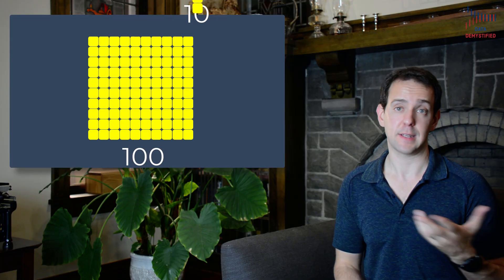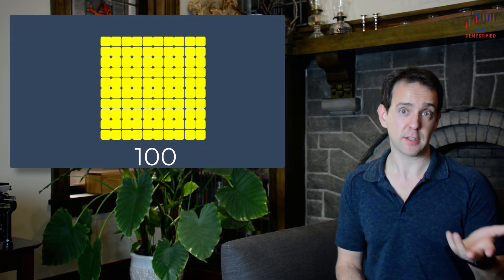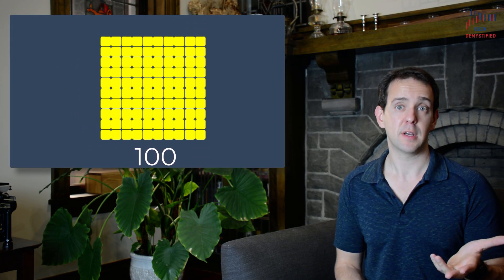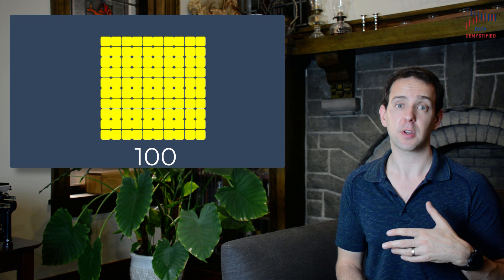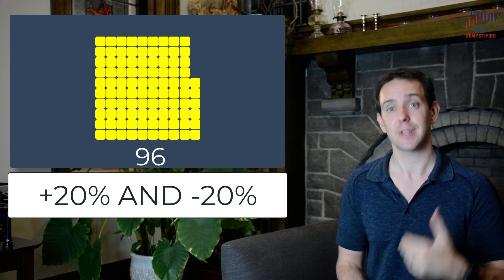This is particularly unintuitive because we're used to adding and subtracting much more than multiplying and dividing. If I have 100 boxes and add 10, then subtract 10, we are back to where we started. But as we saw a moment ago, that's not true for increasing and decreasing by percentages. So how do we fix our intuition to make this idea really clear?